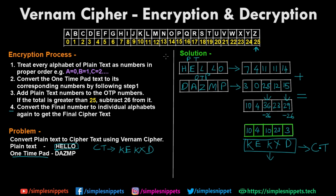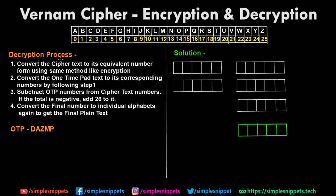Now let's move on to the decryption process. We'll take the same ciphertext KEKXD and the same one-time pad to verify we get back HELLO. Step one of decryption: convert the ciphertext to its equivalent number form using the same method as encryption. The ciphertext KEKXD converts to: K is 10, E is 4, K is 10, X is 23, D is 3. Step two: convert the one-time pad DAZMP to its corresponding numbers again.